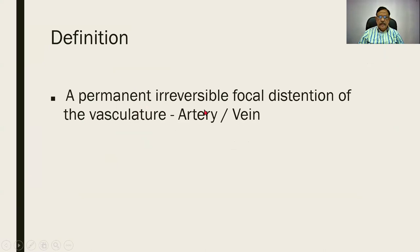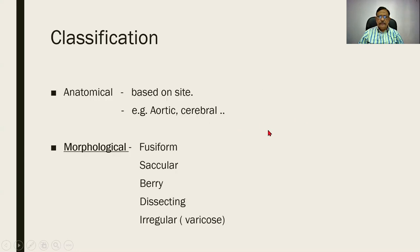A permanent irreversible focal distension of the vasculature — which might mean artery or vein. Classification is an aid to orderly thinking, and when I say classification it can be an anatomical classification, a morphological classification, or an etiological classification.